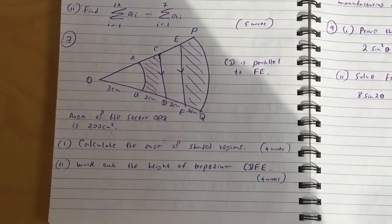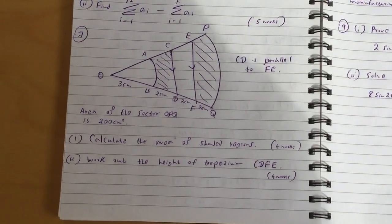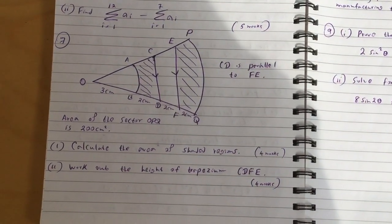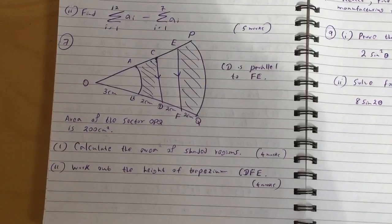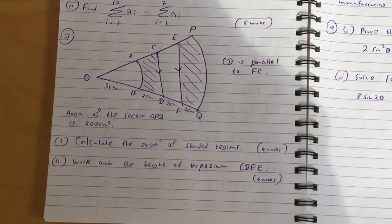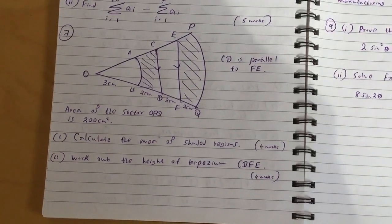Question seven: so we have a sector and the area of the sector OPQ, that's the big one, is 200 centimeters squared. We have various lines going through. We have CD which is parallel to FE.